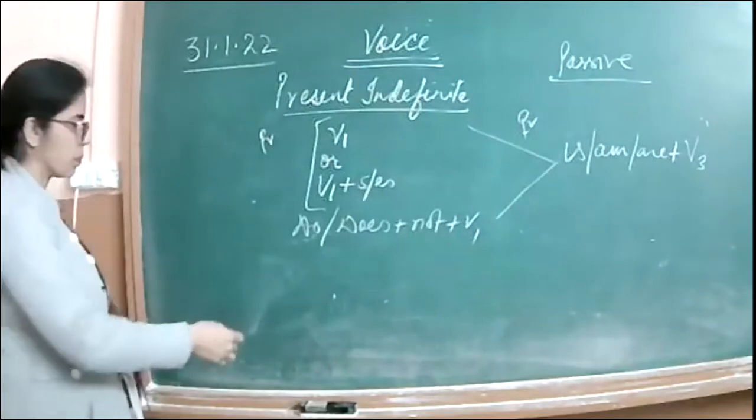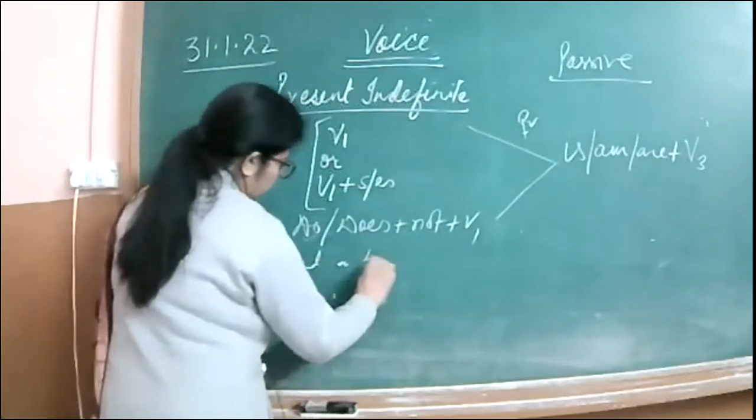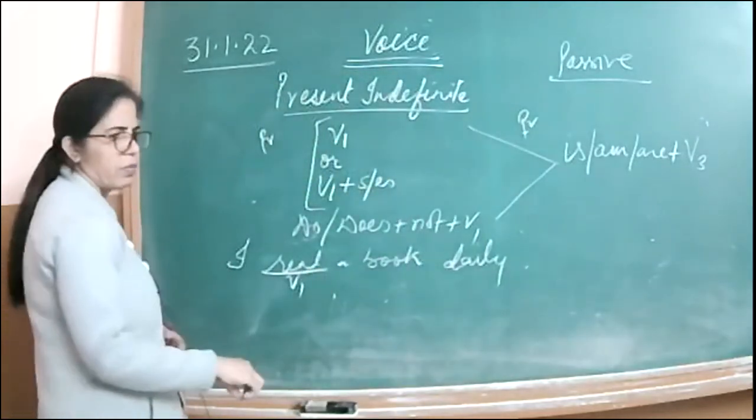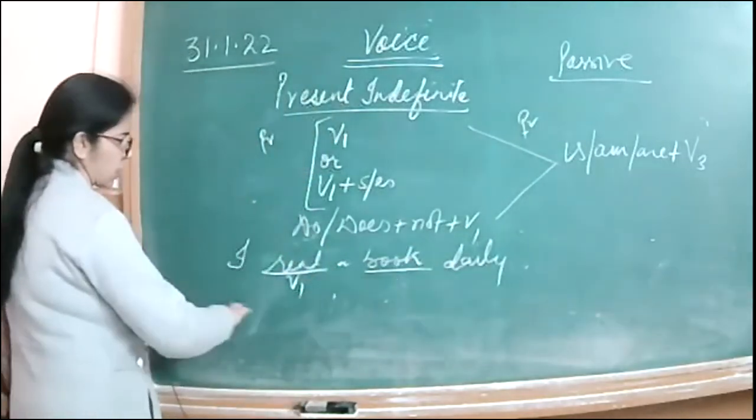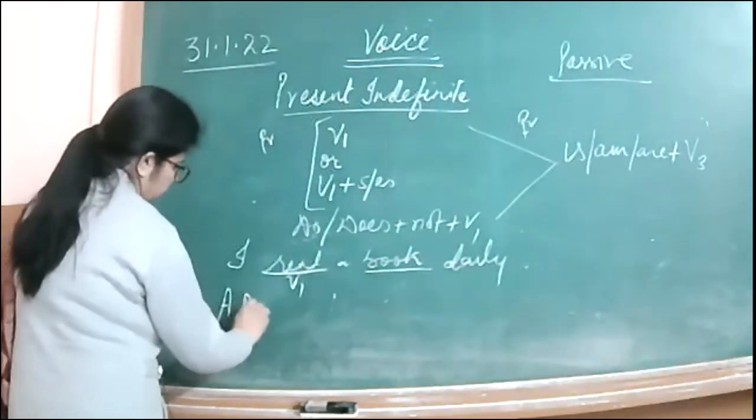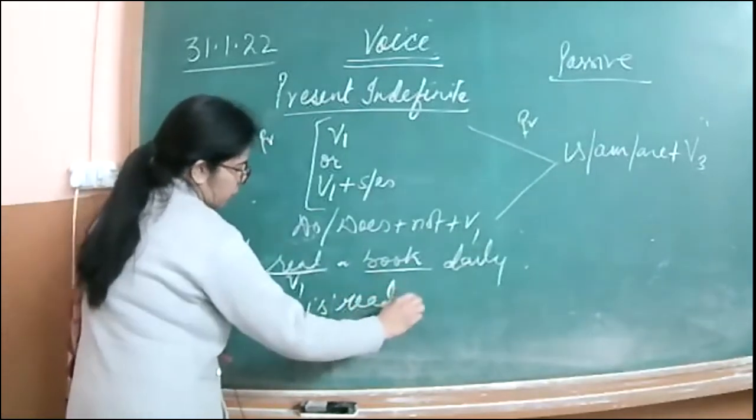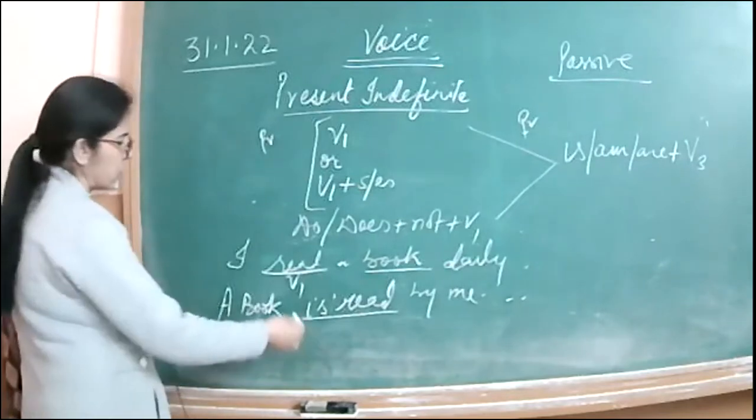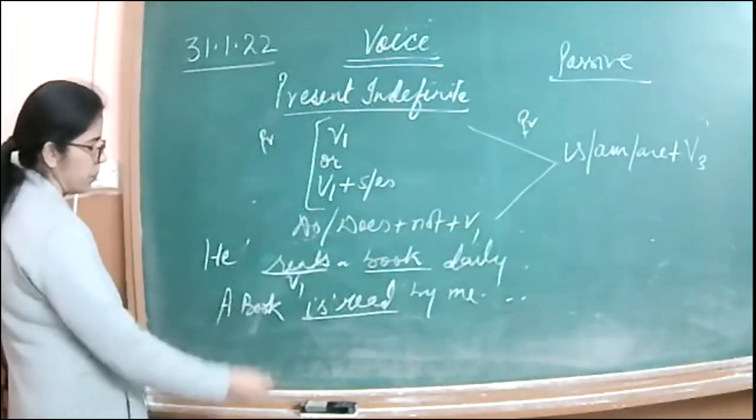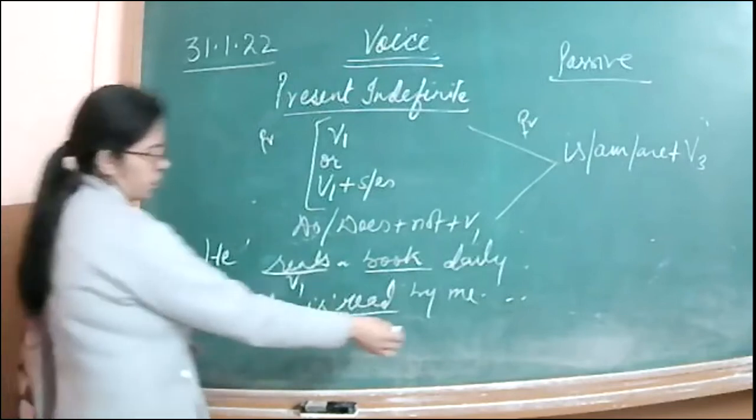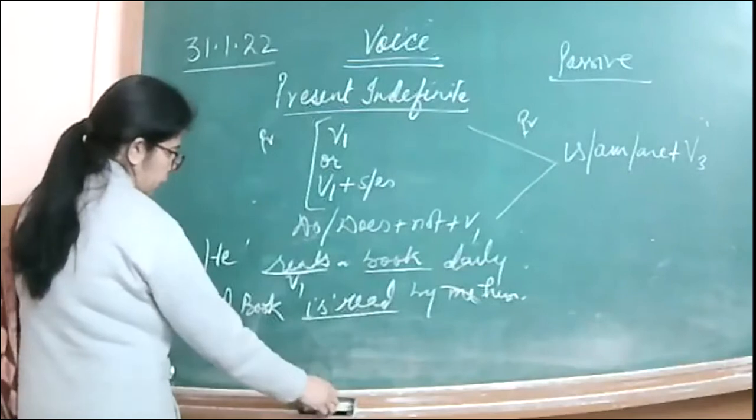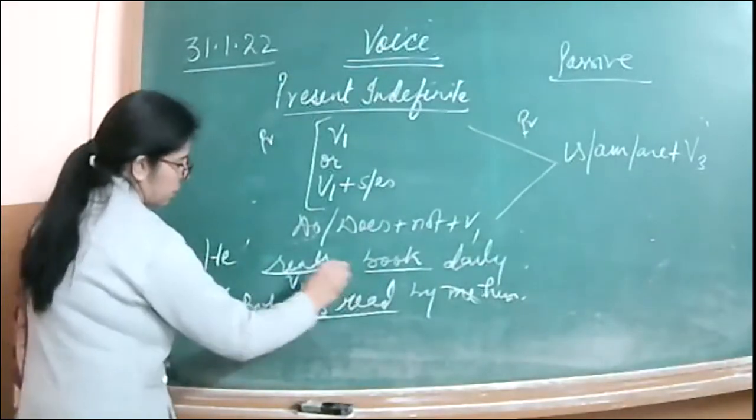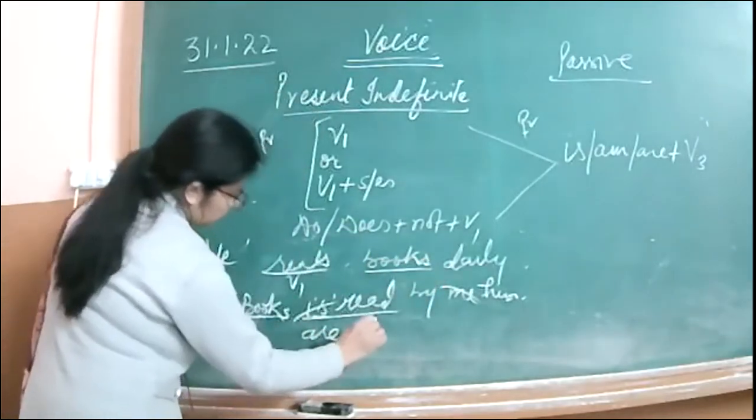So when we change the voice of present indefinite, then what happens? The rule of passive is is, am, or are plus V3, third form of verb. Otherwise the present form is in both tense. So tense does not change in voice. If I say I read a book daily, so here read is first form. So when we change the voice, it means that the action will become the subject. A book is read by me daily. So is read. Suppose it was he reads a book daily, even then the answer would be a book is read by him. So him would come.